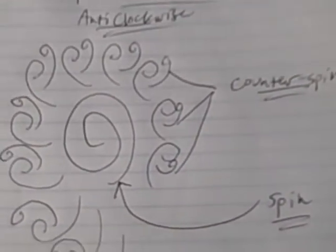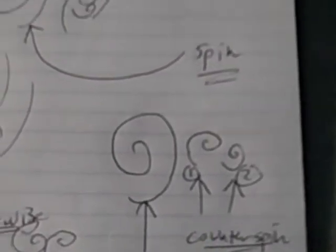Whether you call it magnetic, whether you call it whatever the hell, you can call it whatever you want. The fact is it's spin and counter spin. You have a larger spin, then smaller spin, then smaller spin.